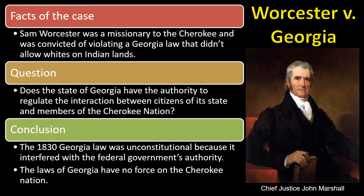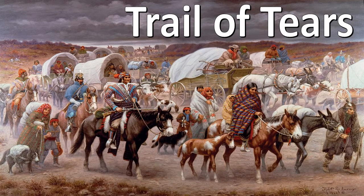President Jackson refused to enforce the court's decision, allowing states to pass additional laws that damaged Indian tribes. Following the passage of the Indian Removal Act, the federal government began a series of forced relocations of over 60,000 American Indians from their ancestral homelands to Indian territory west of the Mississippi River. Along the route, people suffered from exposure, disease, and starvation. Approximately 4,000 died before they reached their destination. Tribes relocated included Cherokee, Muscogee, Seminole, Chickasaw, and Choctaw. This is known as the Trail of Tears.